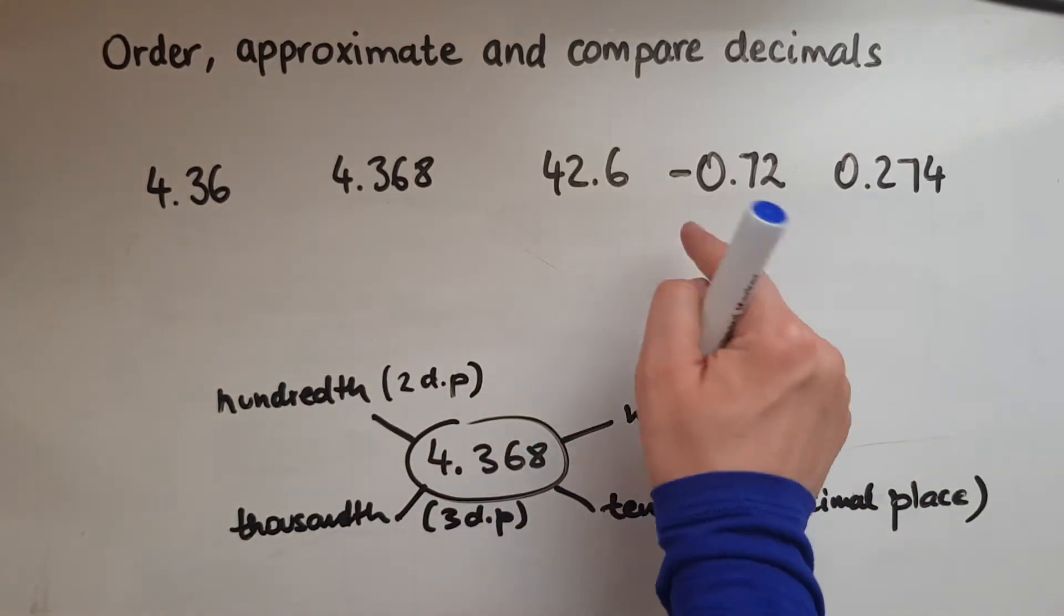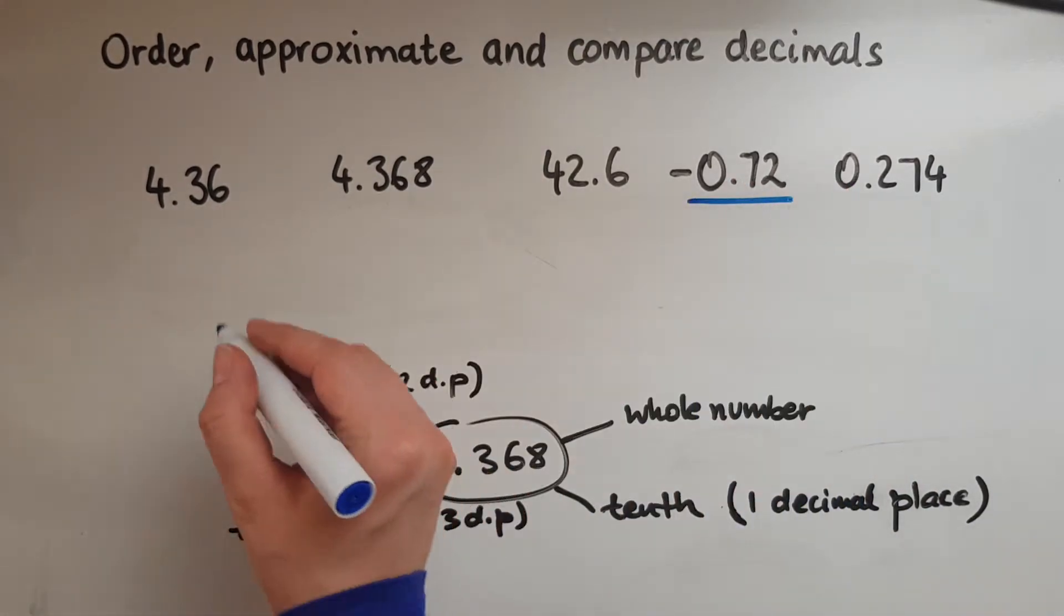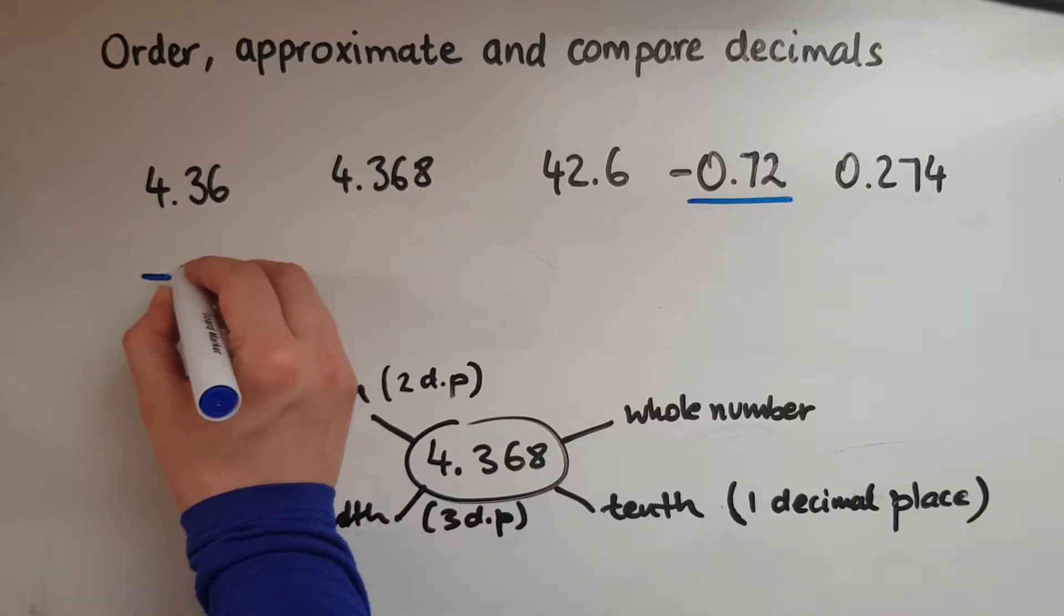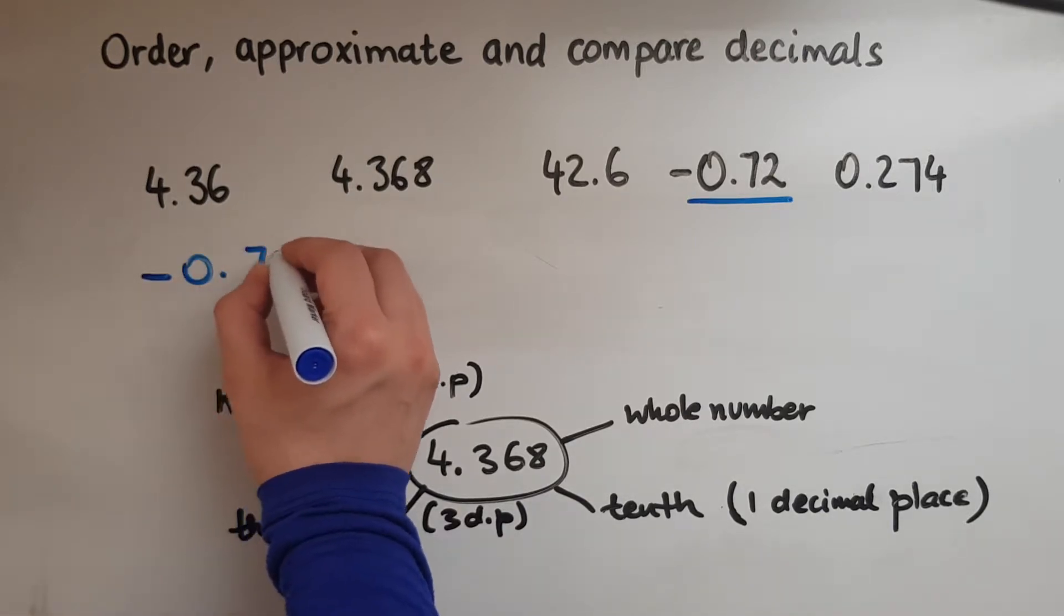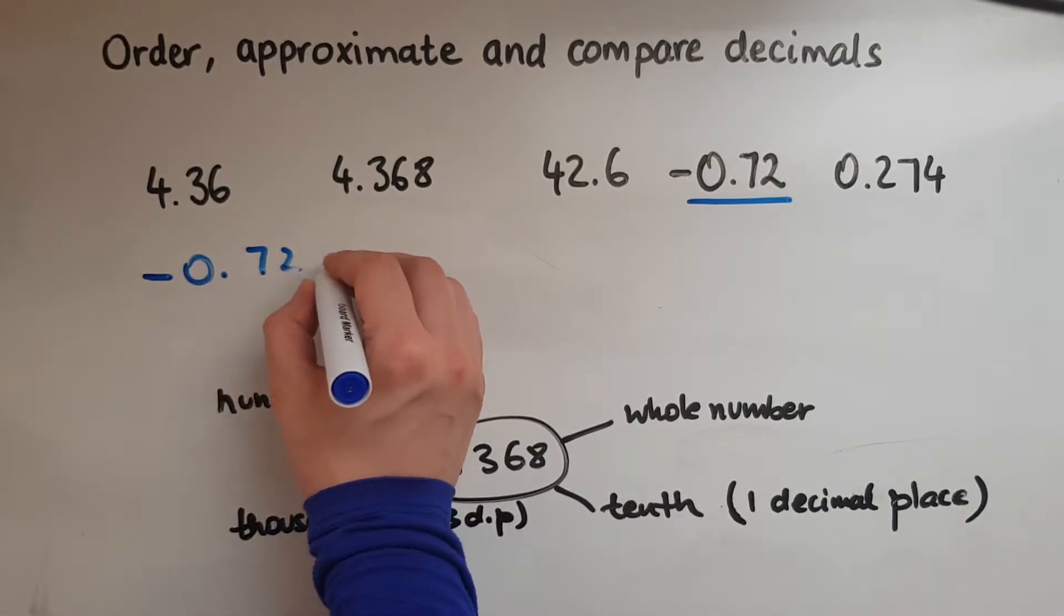So I'll start off with this one because this is the smallest. It's a negative, so minus 0.72, because we ordered them from the smallest to the biggest.